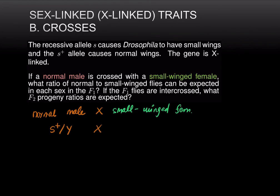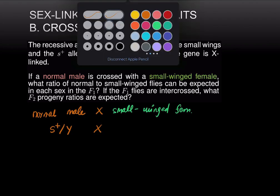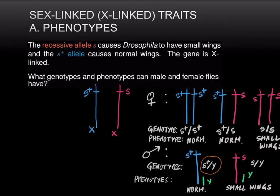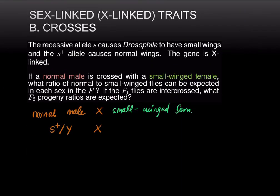Next let's figure out the genotype of the small-winged female. Since small wings is the recessive trait, the female must be homozygous — S over S — to show the small-winged phenotype. We write the genotype of the female down. Then we write a Punnett square, keeping in mind that a Punnett square is nothing but a way to visualize meiosis and fertilization.